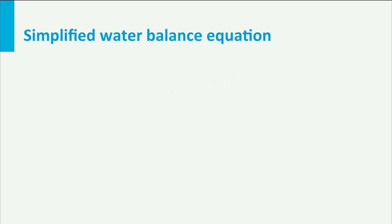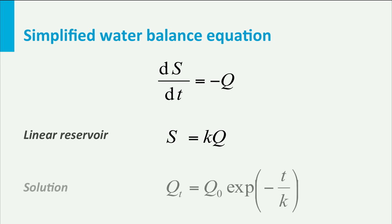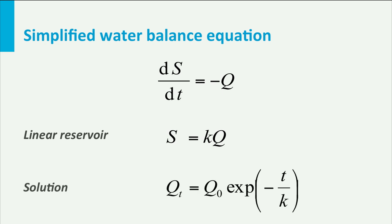It is the water balance of the dark blue box. This results in a very simple water balance for dry weather. On top of that, we may assume that the groundwater discharge is directly proportional to the storage. The proportionality coefficient k represents the average residence time of the water in the groundwater reservoir. Mathematically, it can be easily shown that the solution of these two equations is an exponential function.